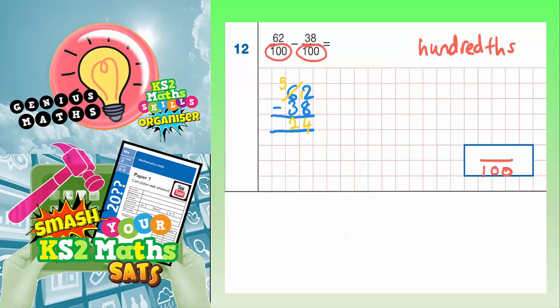So 62 take away 38 is 24. But because I'm dealing with 62 hundredths take away 38 hundredths, I'm down to 24 hundredths. So in my answer box, I need to make sure I've written 24 hundredths.